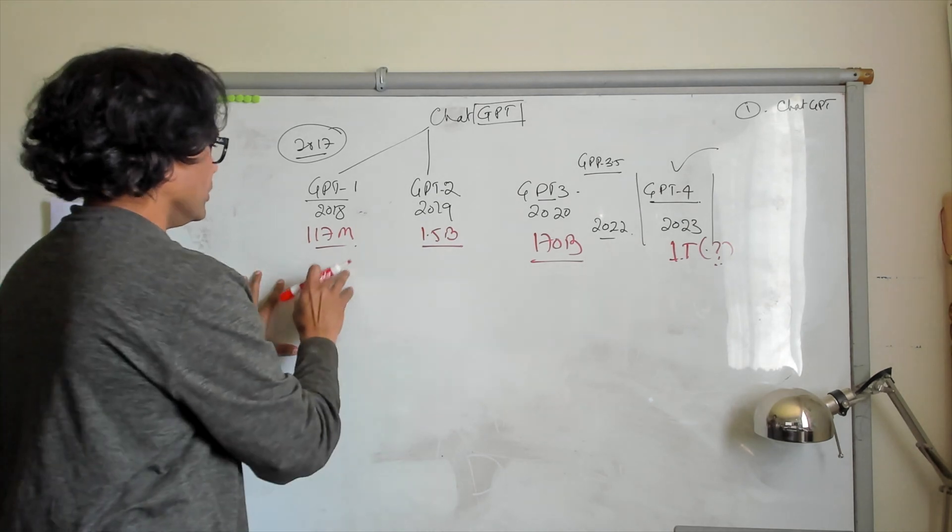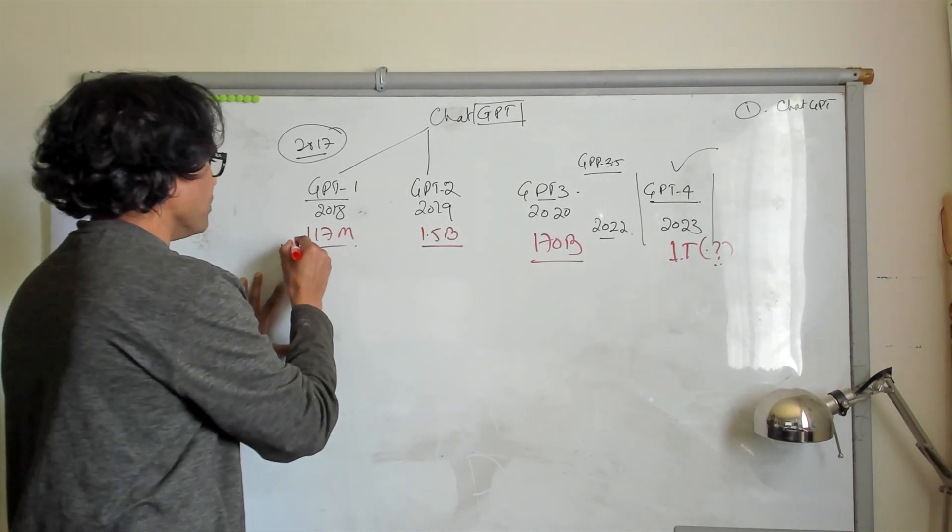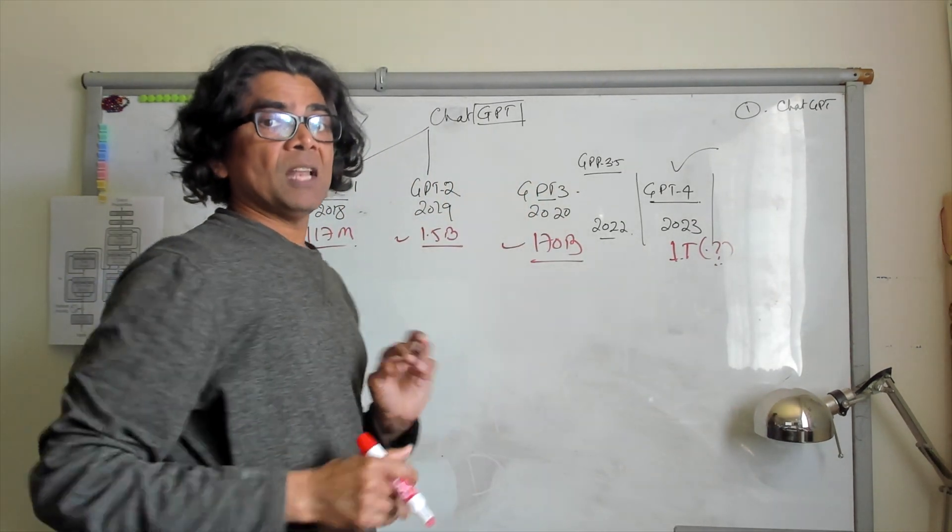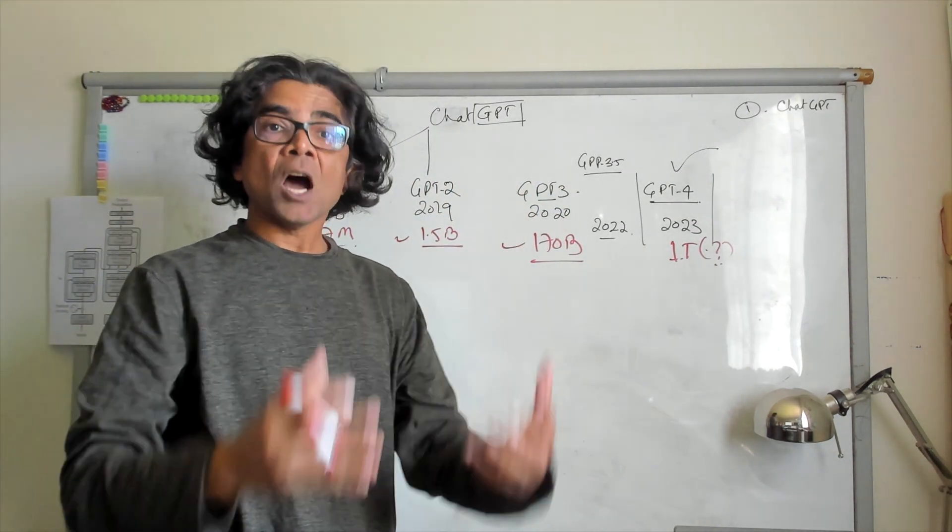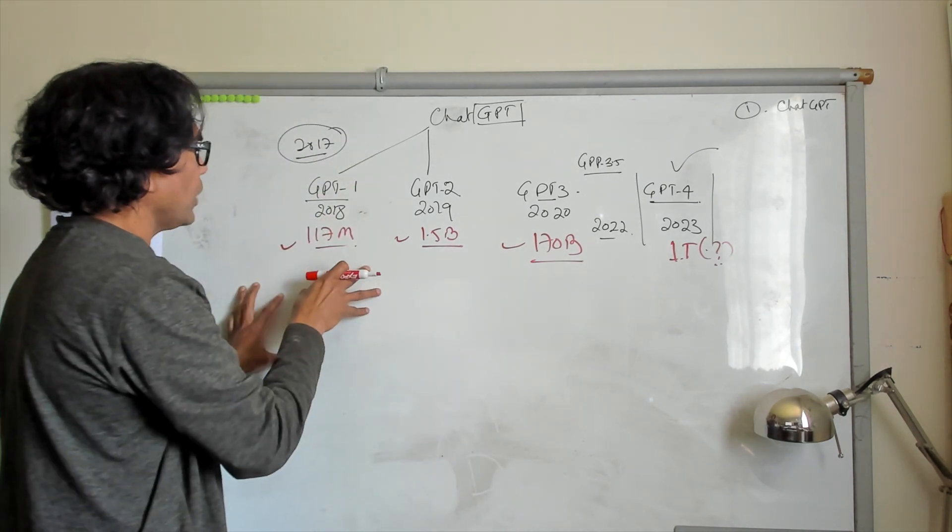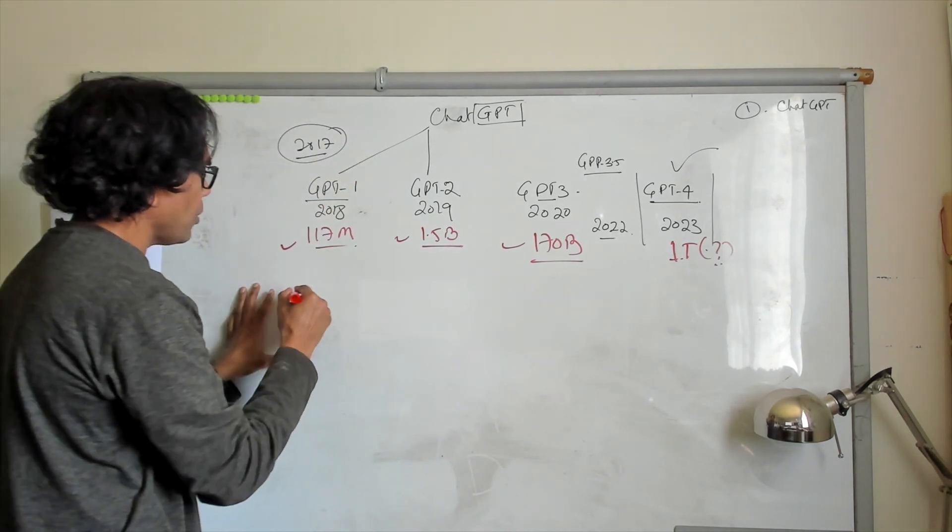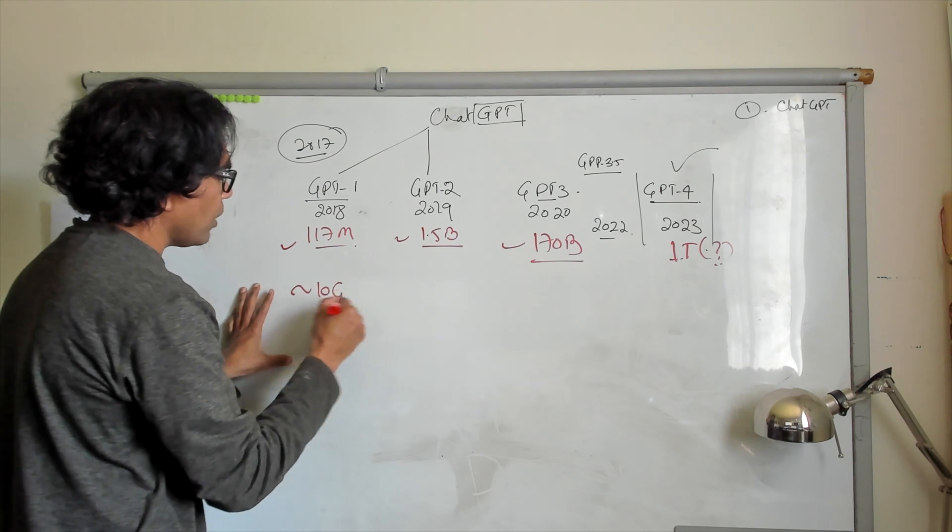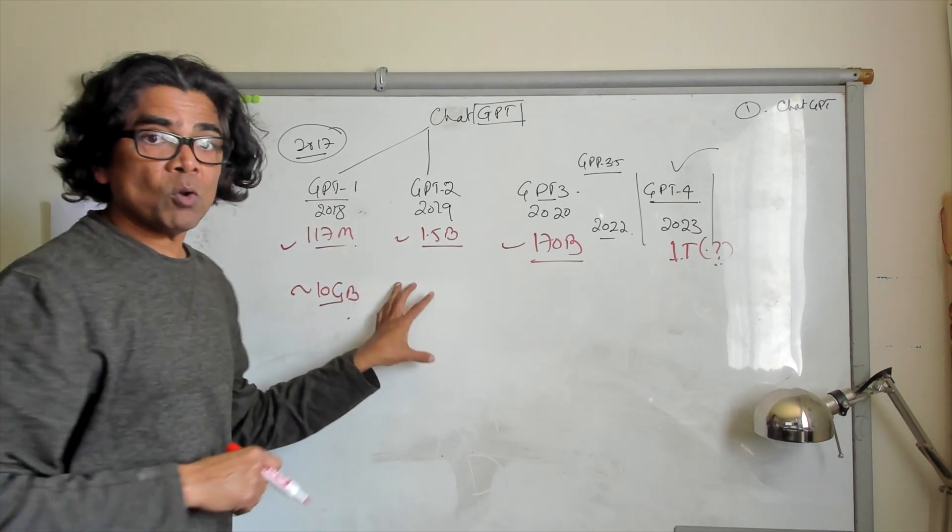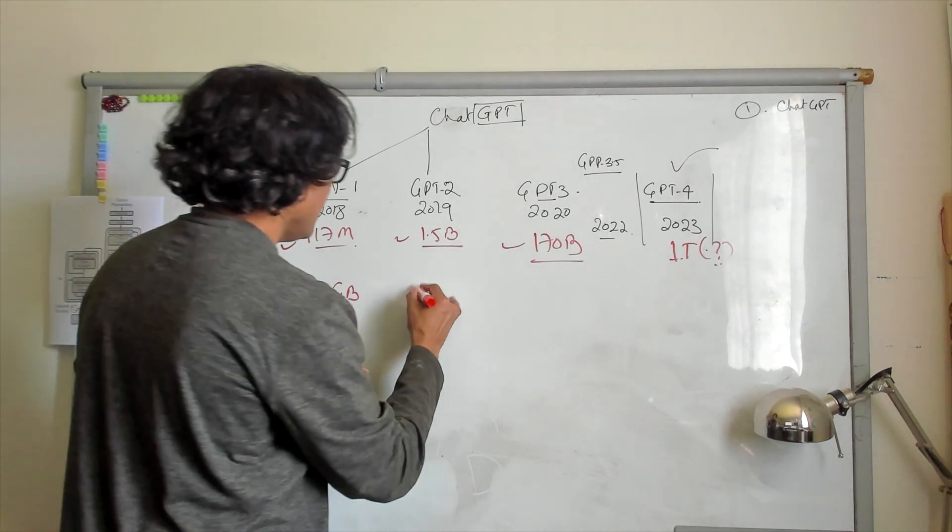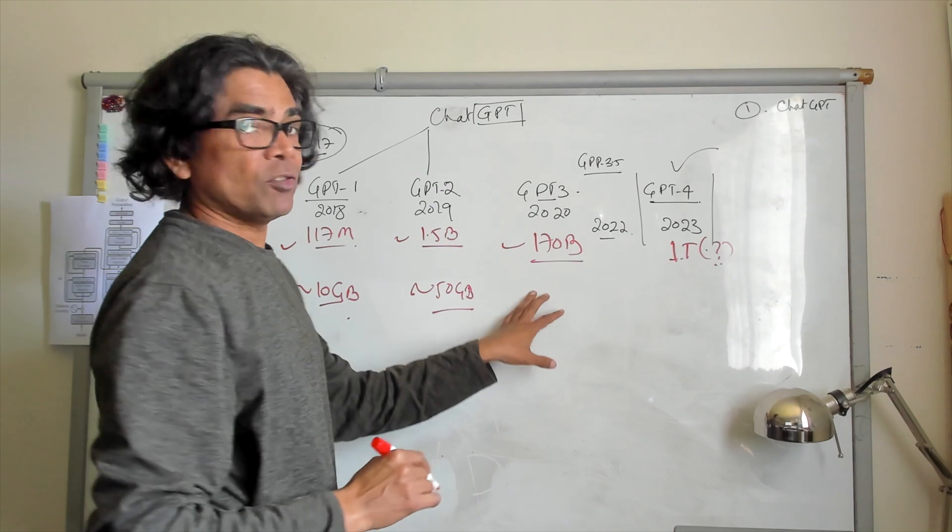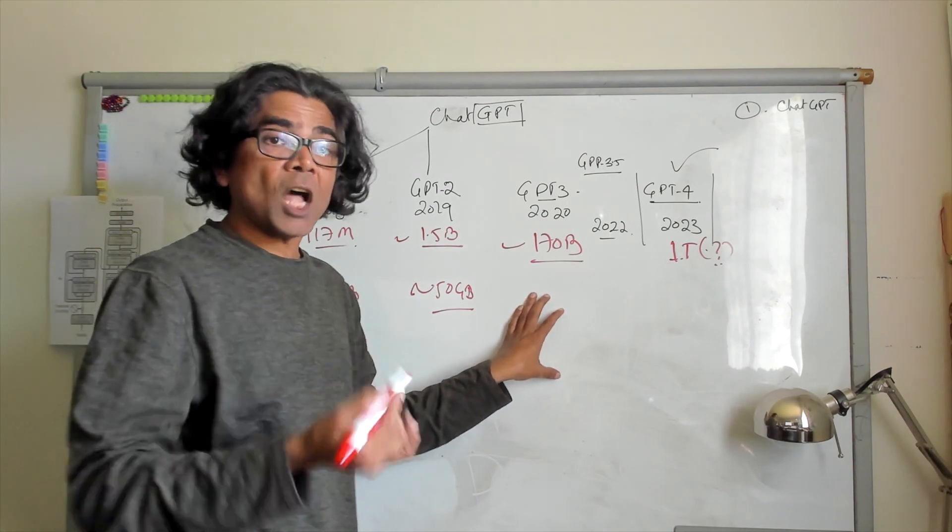The first thing to understand: the more and more parameters, it means the model itself has been trained for larger content. The very first model was trained on about under 10 gigabytes of content. Then the GPT-2 model was actually trained for about under 50 gigabytes of content.